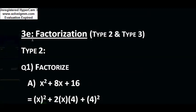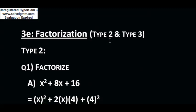Exercise 3e is again about factorization — Type 2 and Type 3. Type 2 means identity number 1 and identity number 2, and Type 3 means identity number 3. According to identity 1, (a + b)² = a² + 2ab + b², and (a - b)² = a² - 2ab + b². In Type 3, the identity is a² - b² = (a + b)(a - b).